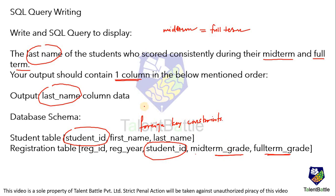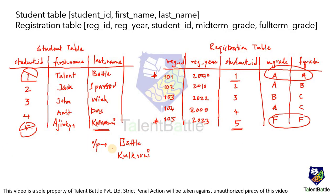Step by step: first we need to create the database tables as per the provided schema, then insert some dummy data, write the query, and cross-check the answer. I have taken two tables — the Student table with student ID, first name, and last name, and the Registration table with registration ID, registration year, student ID, midterm grade, and full term grade. I've added student IDs 1 to 5. In the Registration table, grades are: student 1 has A and A, student 2 has A and B, student 3 has B and C, student 4 has A and C, and student 5 has F and F.